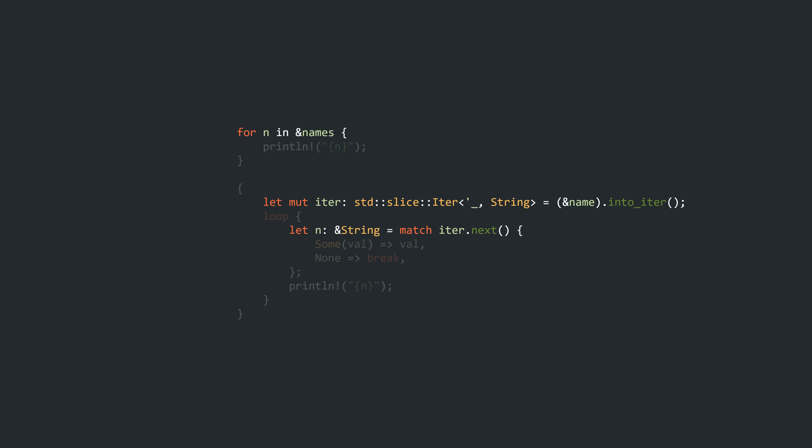The loop desugared into this because we told our for loop to iterate over a reference to names. If we instead iterate over names directly, which consumes it, the call to into_iter returns an IntoIter struct from the vec module. This iterator takes ownership of the vector's elements and can thus return owned strings. Now we're getting to the bottom of this. Or are we? Maybe we should take a closer look at how Vec actually implements the IntoIterator trait.